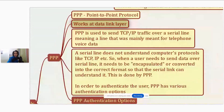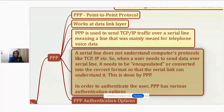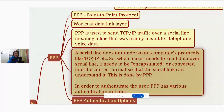PPP is used to send TCP/IP traffic over a serial line - meaning a line that was mainly meant for telephone voice data. A serial line does not understand computer protocols like TCP/IP. So when a user needs to send data over a serial line, it needs to be encapsulated or converted into the correct format so that the serial link can understand it, and that job is done by PPP - Point-to-Point Protocol.